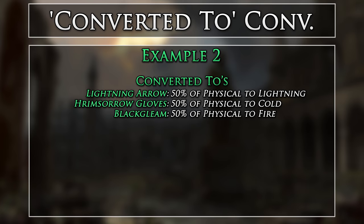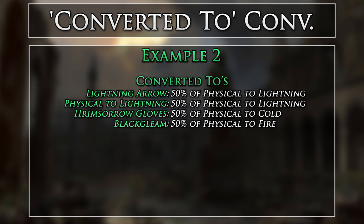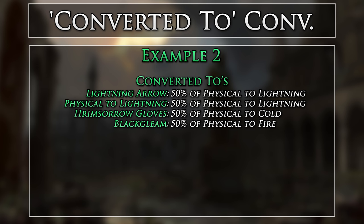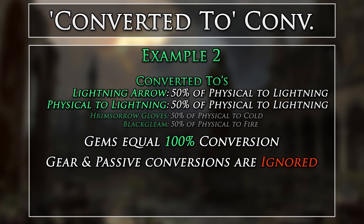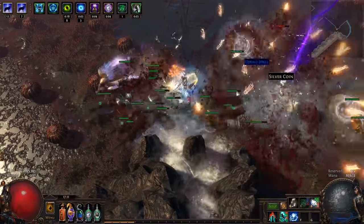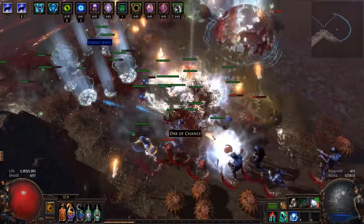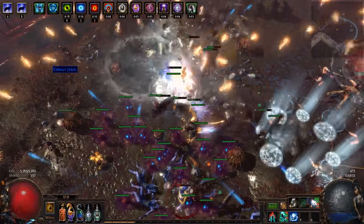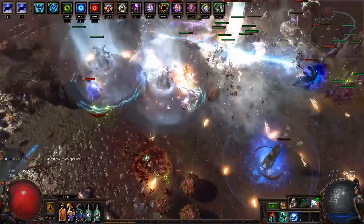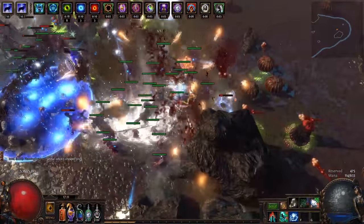If we take the same example but also use the Physical to Lightning Support gem, we will have another 50% of physical damage converted to lightning. We now have two gems that cannot scale, and their total equals 100% conversion. This means that any other conversions will be ignored, making the conversions from the Hrimsarrow Gloves and Black Gleam inert. Of course, with converted to damage, we can still make use of added as conversions even if we have 100% of our damage converted to a different element, because all conversion calculations are done before the base damage source is converted to its final damage. To expand on this, let's take a look at a final, complicated example.